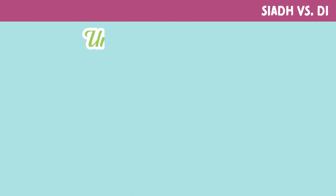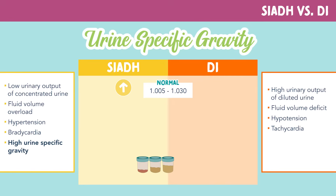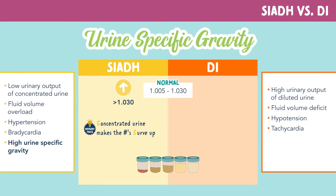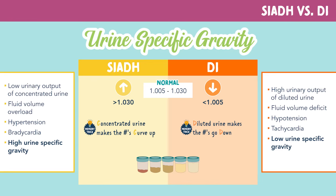Next, we'll look at urine-specific gravity. A normal urine-specific gravity is 1.005 to 1.030. SIADH will have a high urine-specific gravity greater than 1.030 — you can remember this by the memory trick: concentrated urine makes the numbers curve up. Patients with DI will have a low urine-specific gravity less than 1.005 — diluted urine makes the numbers go down.